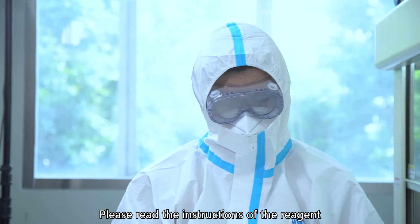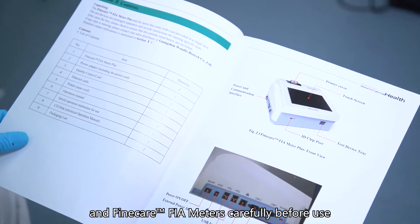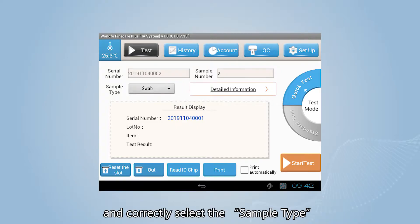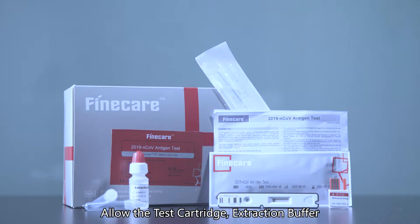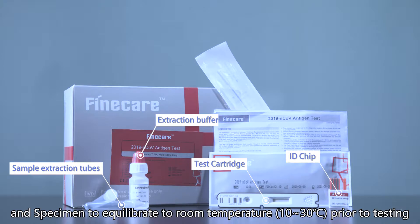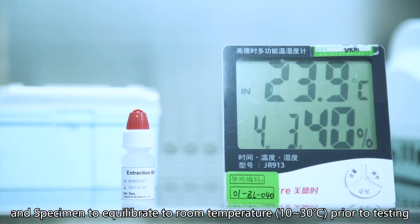Please read the instructions of the reagent and FineCore F5 meters carefully before use, and correctly select the sample type. Allow the test cartridge, extraction buffer, and specimen to equilibrate to room temperature, 10 to 30 degrees, prior to testing.